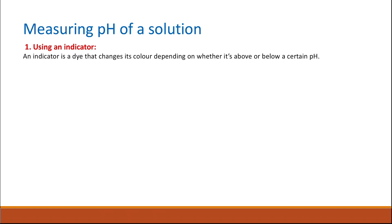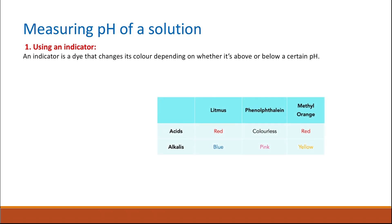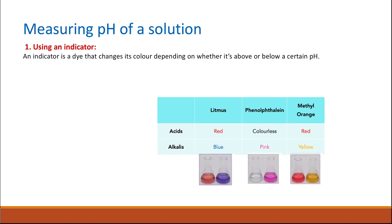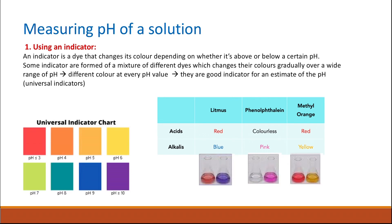There are two types of indicators. A single indicator is a dye that changes color depending on whether it is above or below a certain pH. There are three single indicators to know: litmus (red in acidic, blue in alkaline), phenolphthalein (colorless in acidic, pink in alkaline), and methyl orange (red in acidic, yellow in alkaline). There is also the universal indicator — a mixture of different dyes which gives different colors at different pH values, providing a rough estimation of pH.